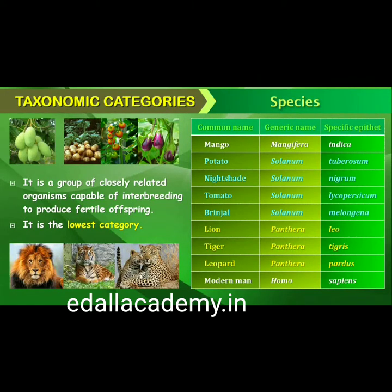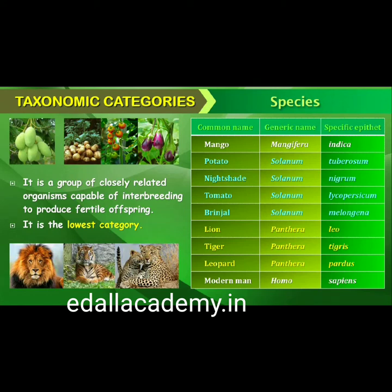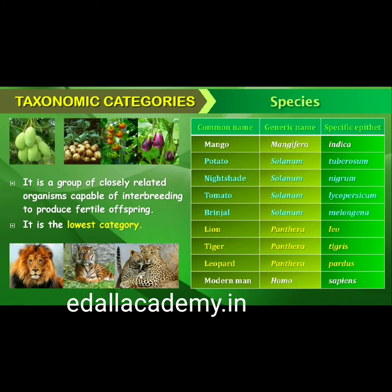Taxonomic studies consider a group of individual organisms with fundamental similarities as a species. One should be able to distinguish one species from another closely related species based on distinct morphological differences. Let us consider Mangifera indica, Solanum tuberosum (potato), and Panthera leo (lion). The names indica, tuberosum and leo represent the specific epithets, while Mangifera, Solanum and Panthera are genera. Each genus may have one or more specific epithets. For example, Panthera has another specific epithet Tigris, and Solanum includes species like nigrum and melangina.